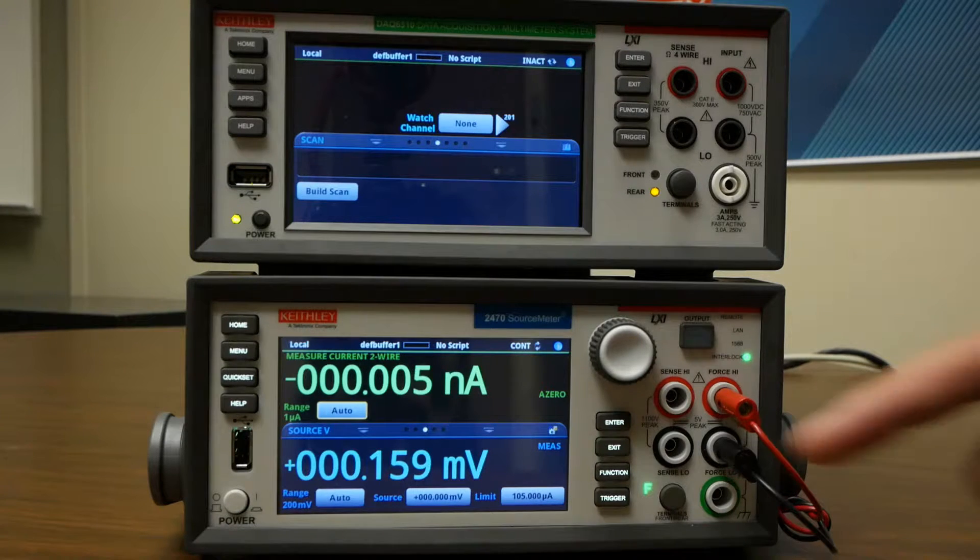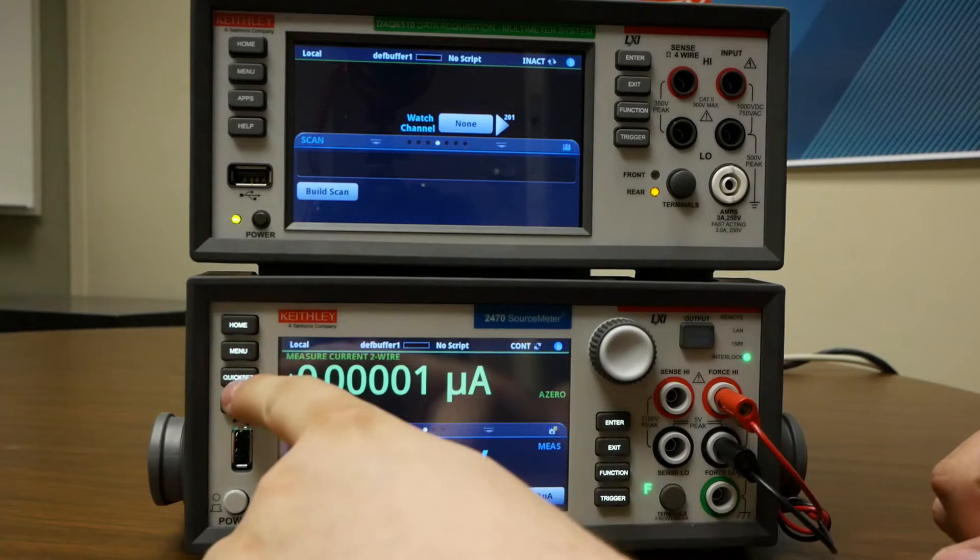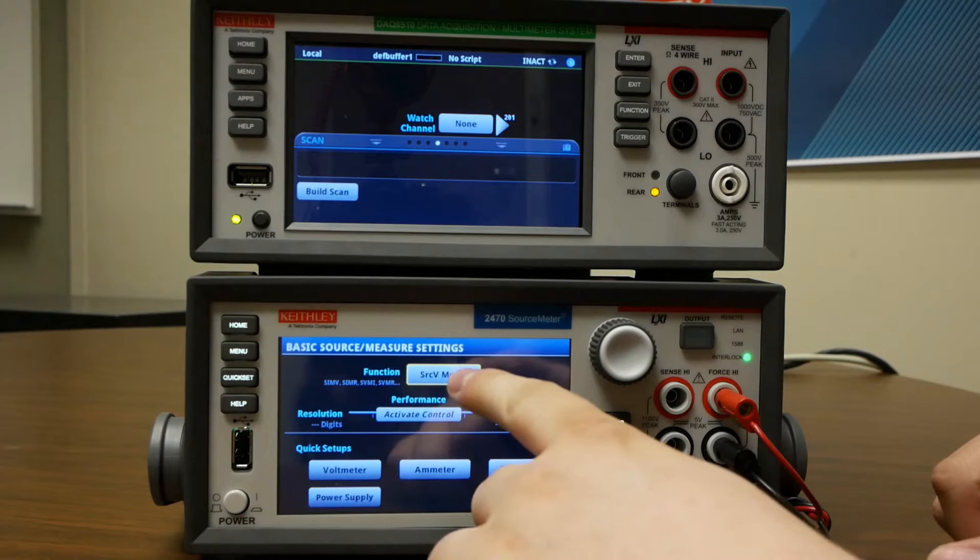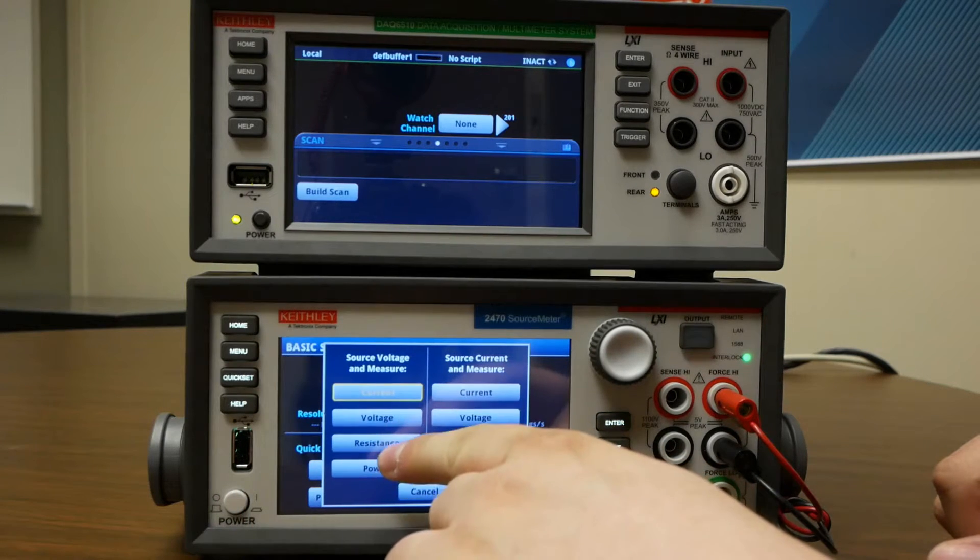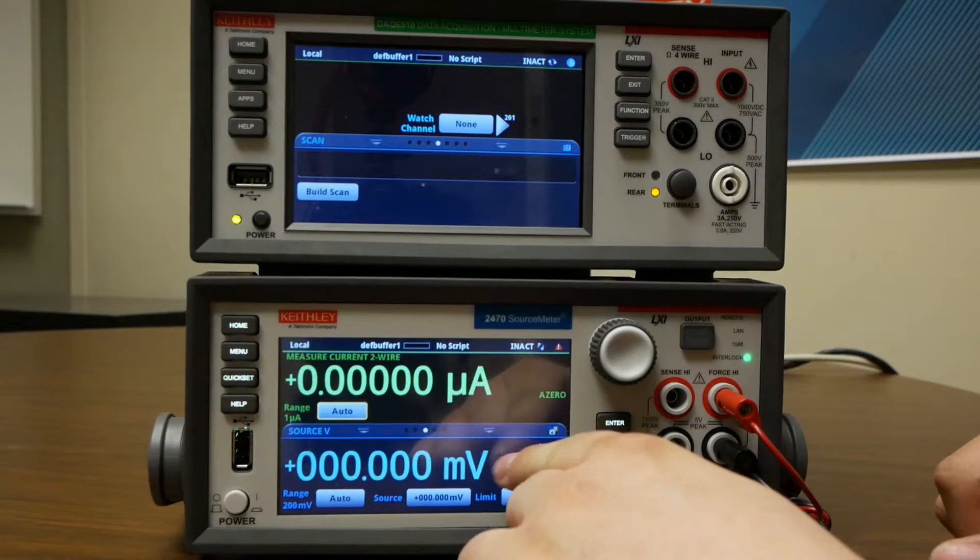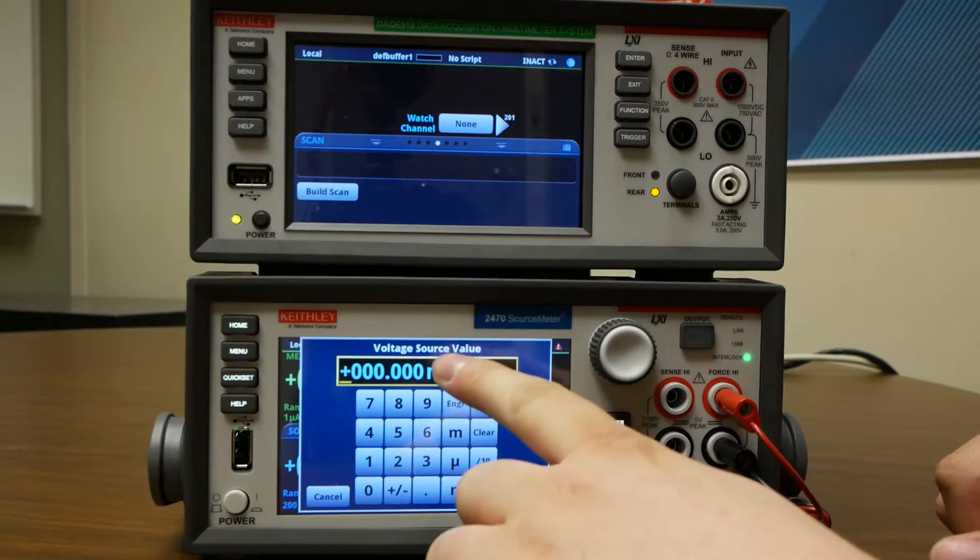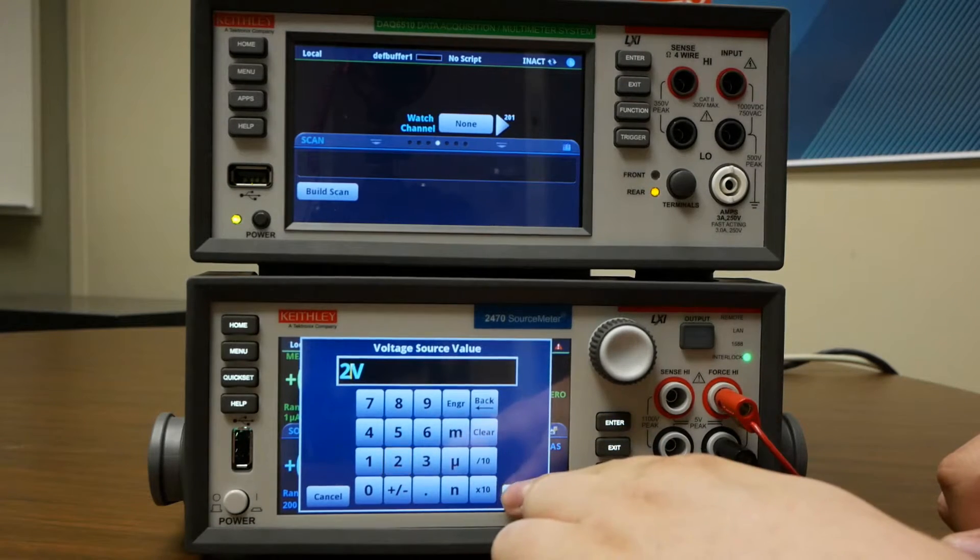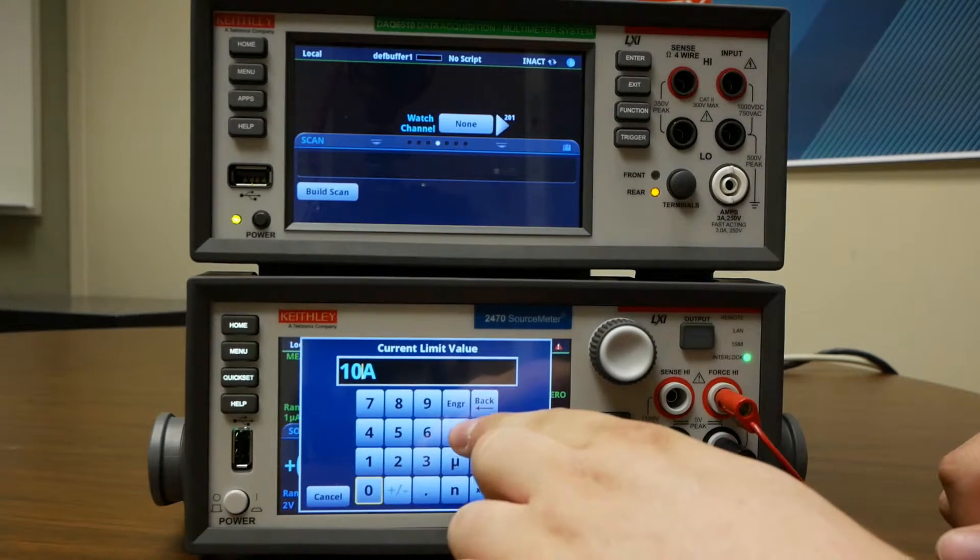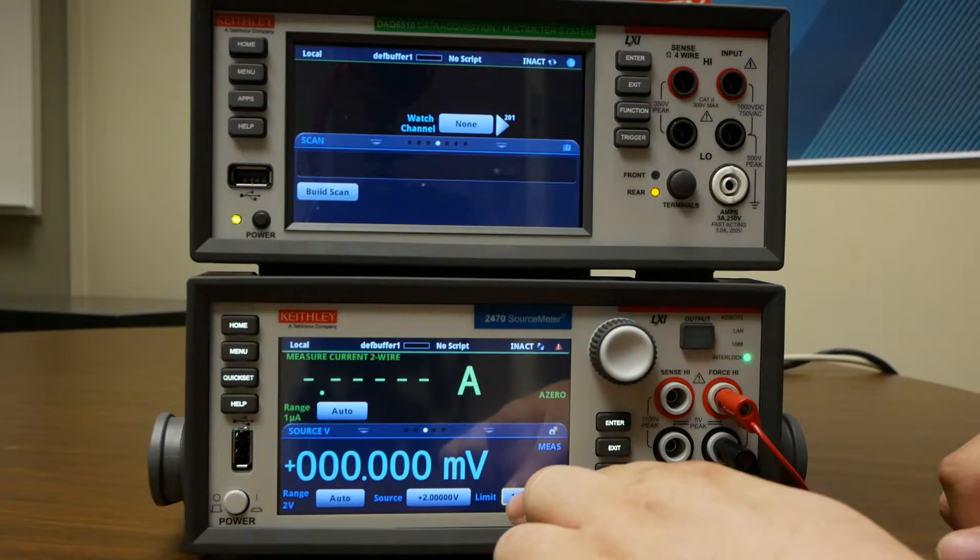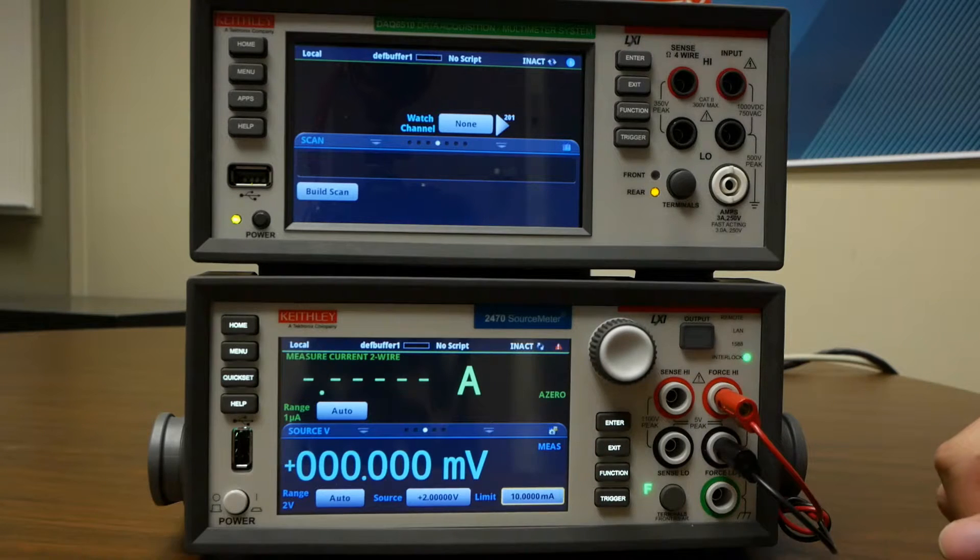Now we'll configure our test. We'll start with the SMU. I'm going to press quick set, change my function to source voltage, measure resistance. We'll set our source voltage to 2 and set a 10 milliamp compliance current. Now this is all ready to be configured.